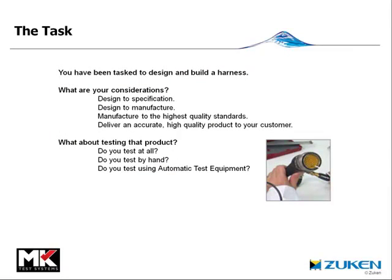What we thought we'd do is create a task and then show you how we go about designing and testing it. The task is to design and build a harness. As engineers we receive a specification for a project and begin to plan how to design that product. We have to consider quality, manufacturability, and meeting specifications, but one thing that sometimes gets overlooked is test. We may design and build a fantastic product, but if we can't test it or it's difficult to test, we will have problems.